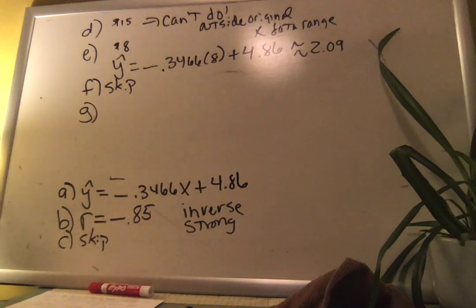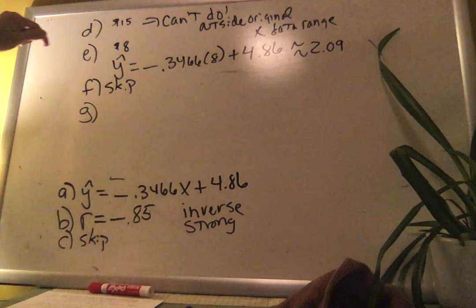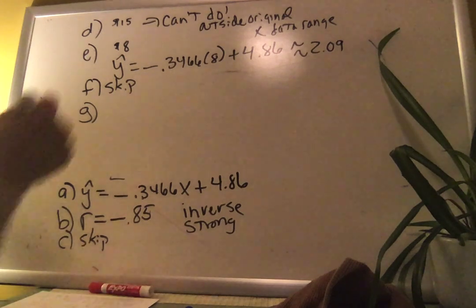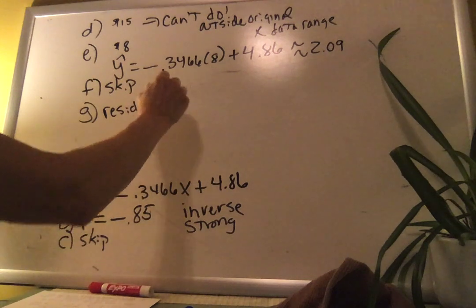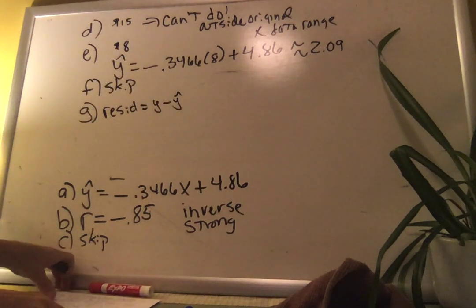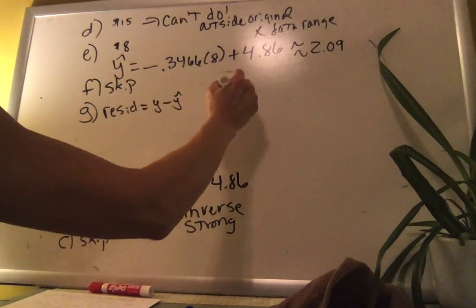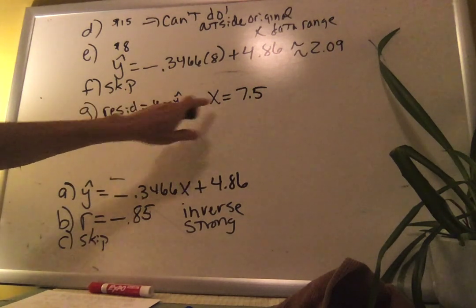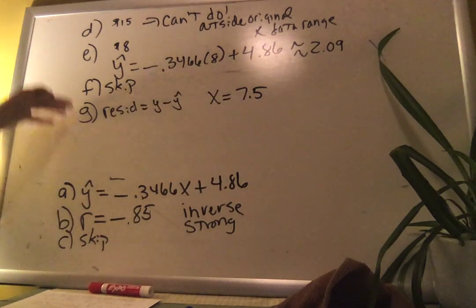Part G asks for a residual. A residual has to reference a particular data point, because the definition of a residual is how far a data point is from the line — it must be an actual data point. For Part E I can predict for any X in range, but for a residual it has to be in the data set. The formula is: residual = y − ŷ. This one asks for the residual at x = 7.5.